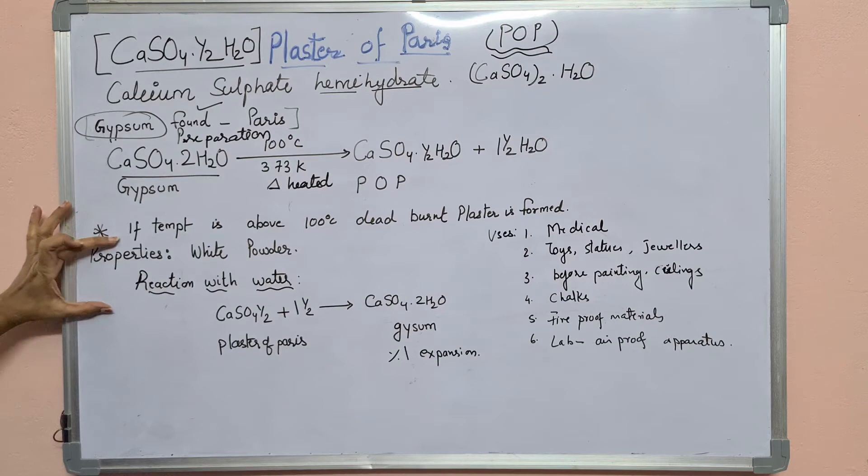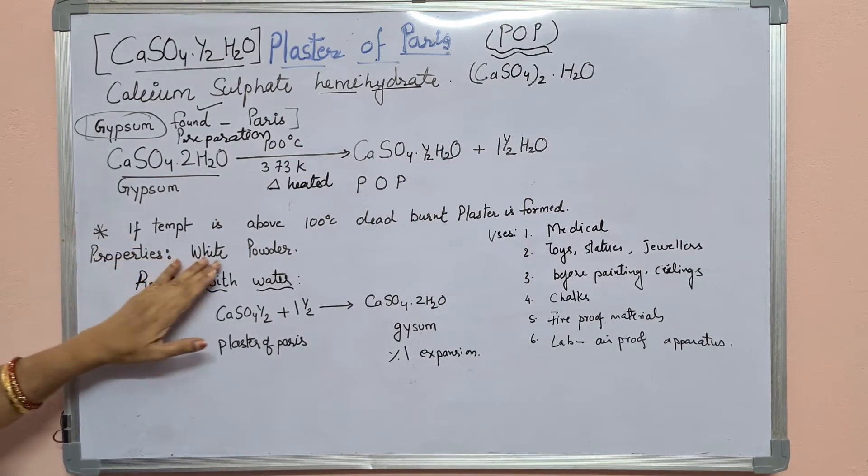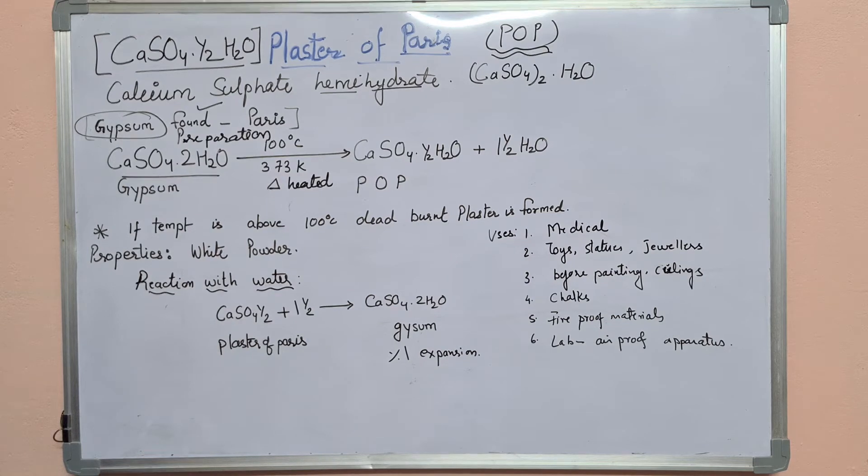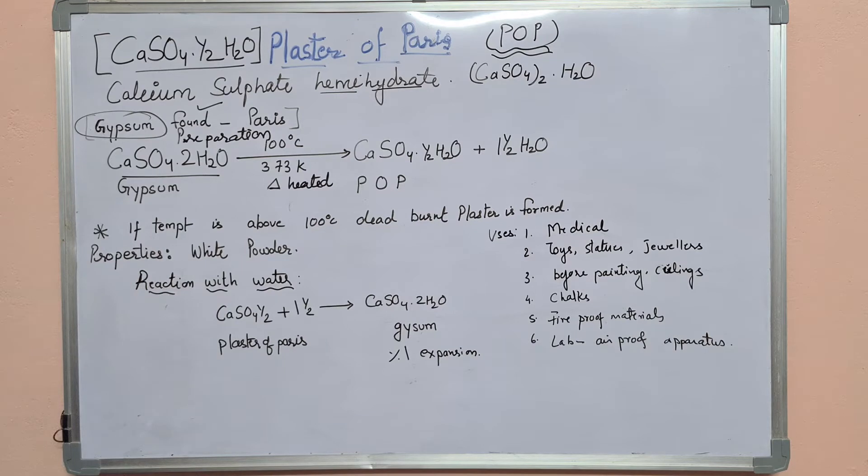Now the properties. It is white powder. I think all of you have seen Plaster of Paris. It is used before paint of any wall - they are putting POP and then paint is applied. It is white color powder.